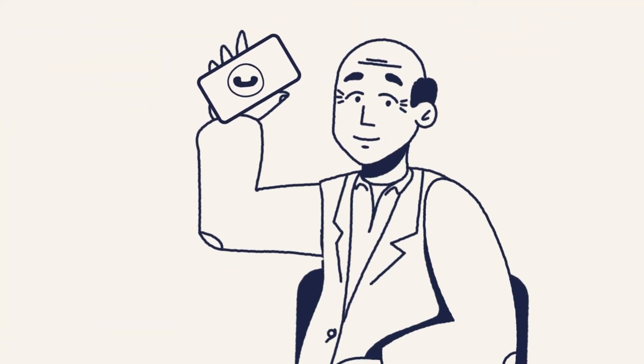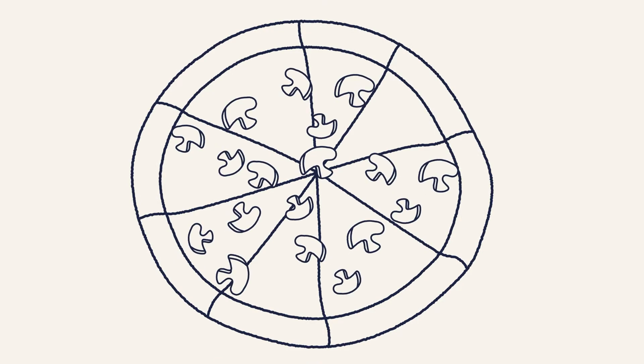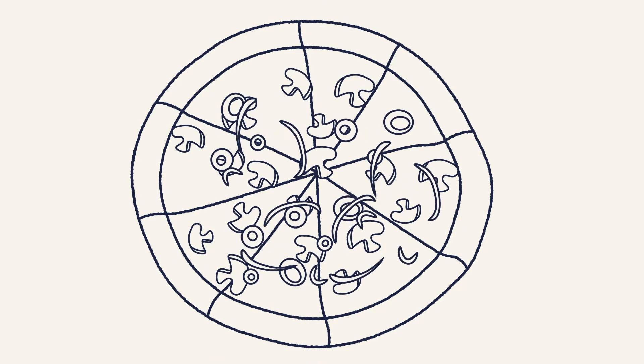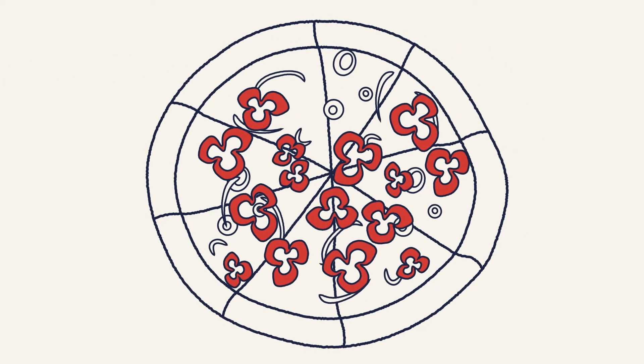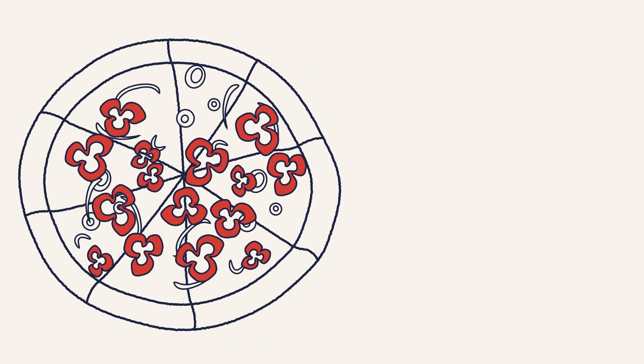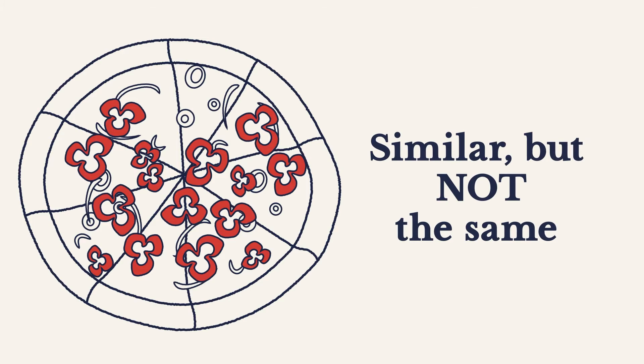Now, back to the pizza analogy. Let's say you order a veggie pizza with mushrooms, olives, and onions for toppings. But the pizza delivery person gives you a veggie pizza with bell peppers, olives, and onions. It is still a veggie pizza and very similar to the pizza you ordered, but it is not the same pizza. And what if you are allergic to bell peppers?